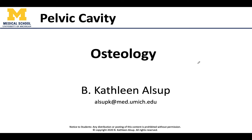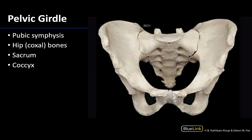Hello anatomy friends, this is Dr. Alsup and in this dissection video we will focus on the osteology that is pertinent to session 12, the pelvic cavity. We discussed the pelvic girdle in the learning objectives, but let's do a nice review here. The pelvic girdle is officially formed by the paired coxal bones as well as the sacrum, that distal portion of the spinal column.